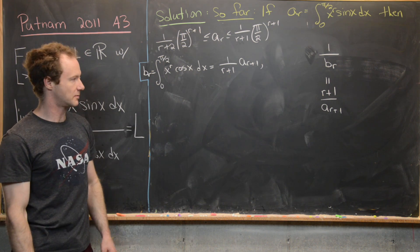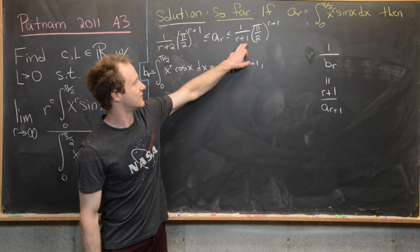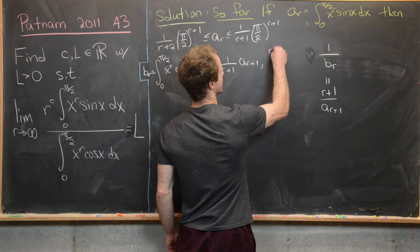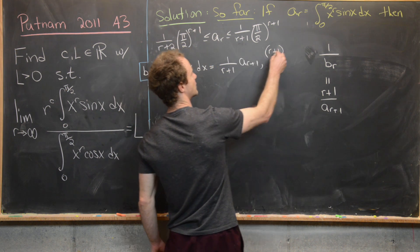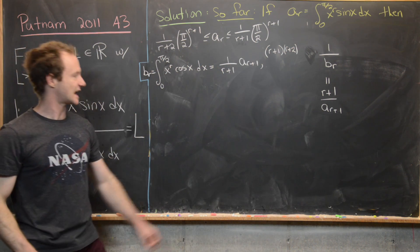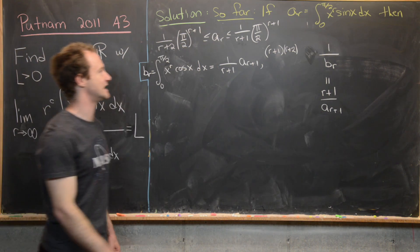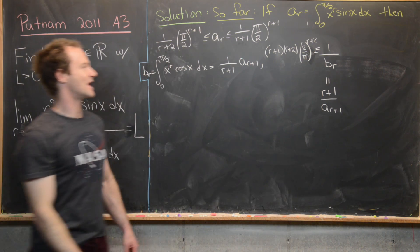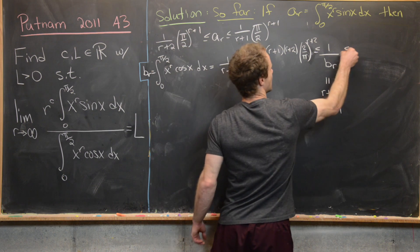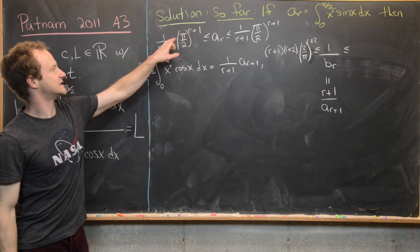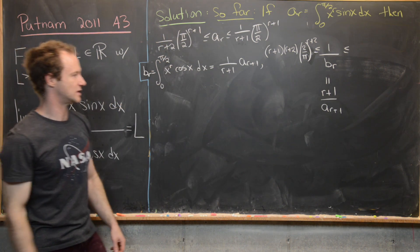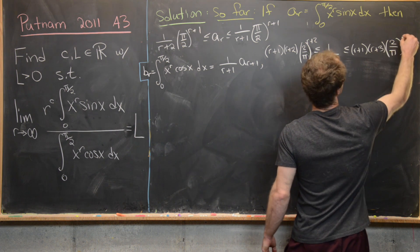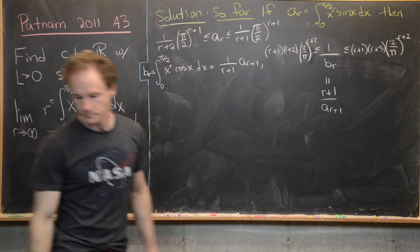Using the bounds on A_R (with index shifted to R+1), we can bound 1/B_R. The lower bound on 1/B_R becomes (R+1)(R+2)(2/π)^(R+2) — from the reciprocal of the upper bound on A_(R+1) — and the upper bound on 1/B_R becomes (R+1)(R+3)(2/π)^(R+2), from the reciprocal of the lower bound on A_(R+1).